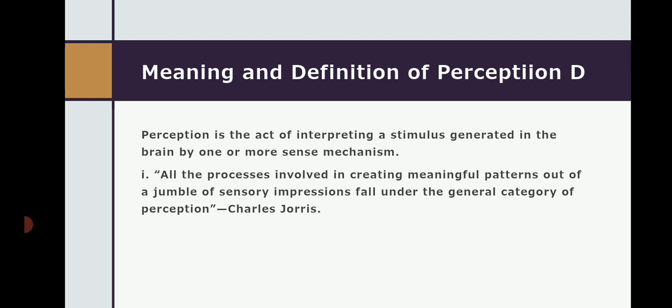The meaning and definition of perception: Perception is the act of interpreting a stimulus generated in the brain by one or more sense mechanisms. Sensation is a primary stage of perception. Whatever is happening in the environment, we stimulate our sensory organs — we observe, we listen. So the process of sensation starts first. Sensation is part of perception. We stimulate our sensory organs for the stimuli, then we receive the stimuli, select them, and then organize them.